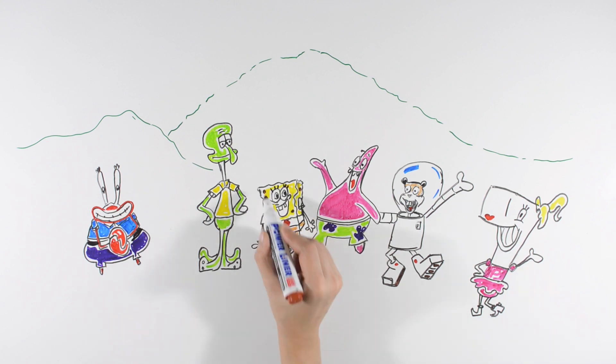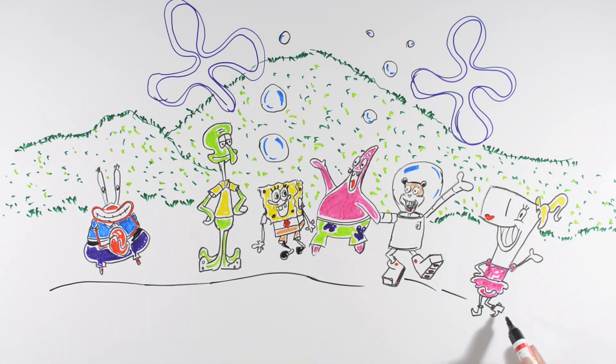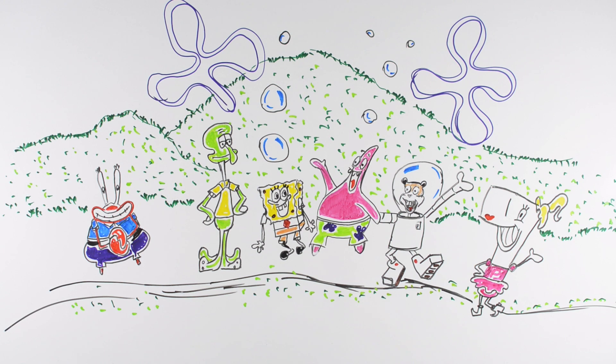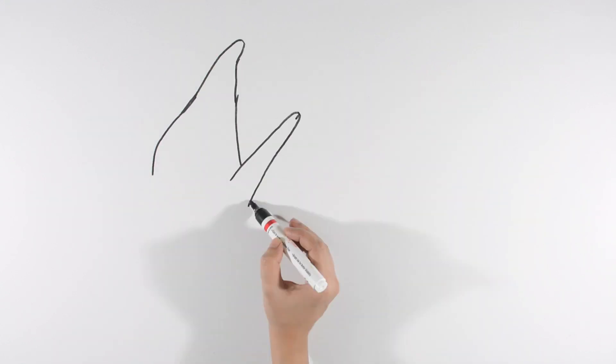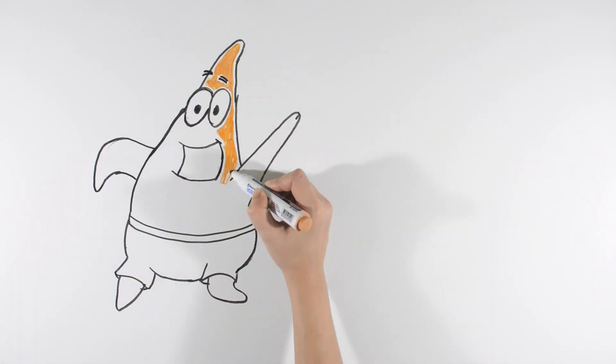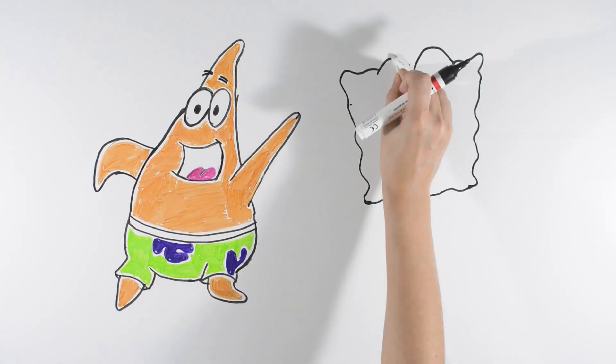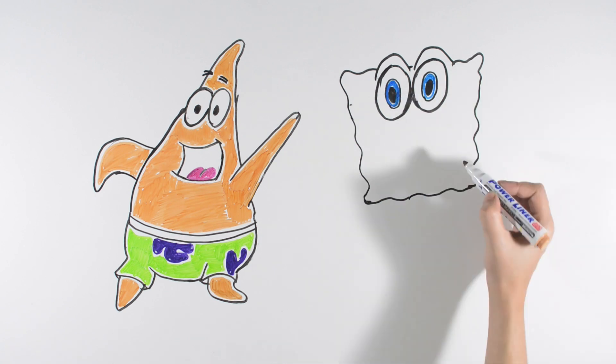Despite SpongeBob SquarePants being aimed at kids, SpongeBob's character is like most adults. He has a dead-end job working for a greedy boss and an annoying neighbor and coworker who despises him. Yet he's one of the most optimistic characters in pop culture. SpongeBob adores his job, thinks the world of his boss and coworker, and never stops smiling.